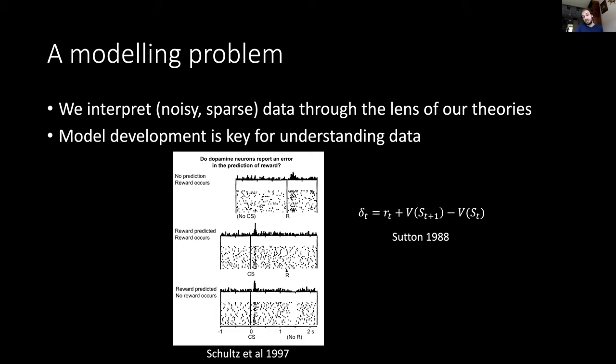One is these hallmark findings in neuroscience by Wolfram Schultz and colleagues in the late 90s, where they recorded from dopamine neurons in the dopaminergic midbrain. They showed that the behavior of these neurons, the firing rates, respond very closely to the dynamics that were formalized by reinforcement learning models.